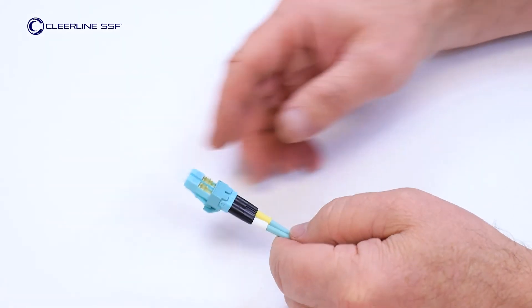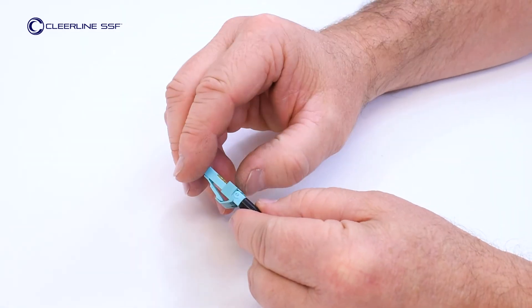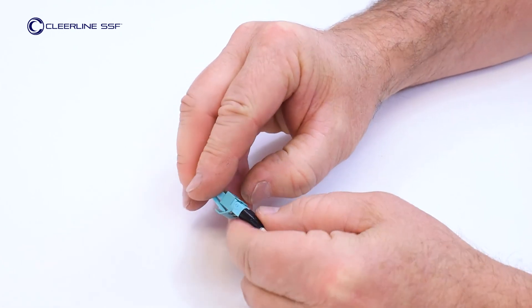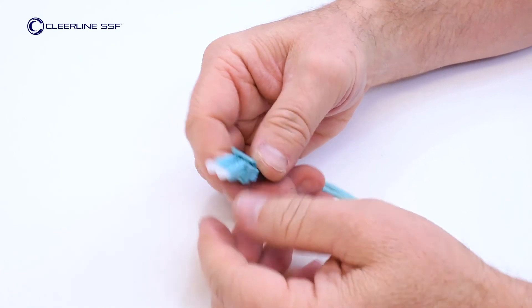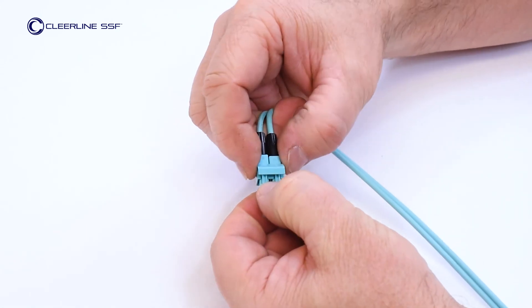To remove clips, use your fingernail or a flat object to lift the locking tab at the base. Press down on connector tabs and slide the clip forward to remove.